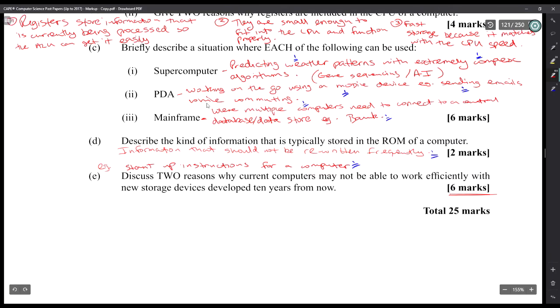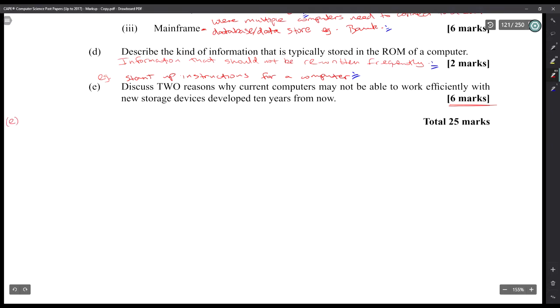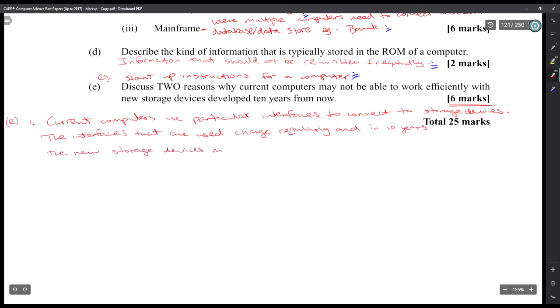And then discuss two reasons why current computers may not be able to work efficiently with new storage devices developed 10 years from now. You have different avenues. You could say current computers use particular interfaces to connect to storage devices, and the interfaces that are used change regularly. And in 10 years, the new storage devices may just not be able to connect. Example: USB-C and USB 2.0, or it could be SATA and IDE. They are different connectors, or it could even be a mouse - most mice use USB and older ones use PS/2.